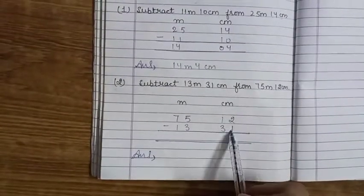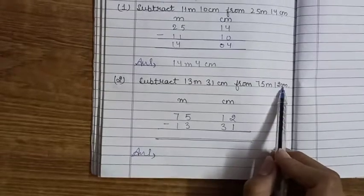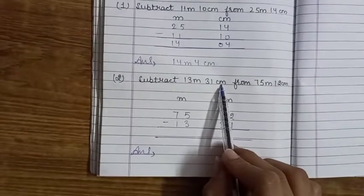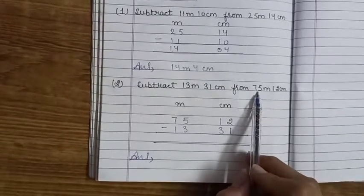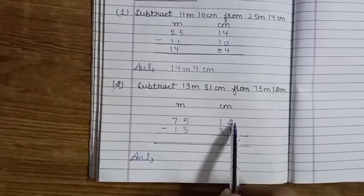The first step is aap ismein columns ko banayenge. Columns mein aap sabse bade jo measurement hai usko aap upar aur jo chhoti measurement jisko aapko minus karna hai woh aap niche likhenge. Bade measurement aapki 75 meter 12 centimeter and the next 13 meter 31 centimeter.